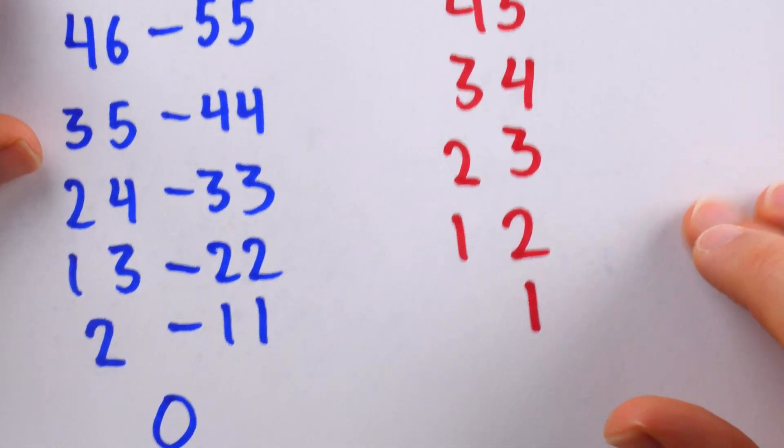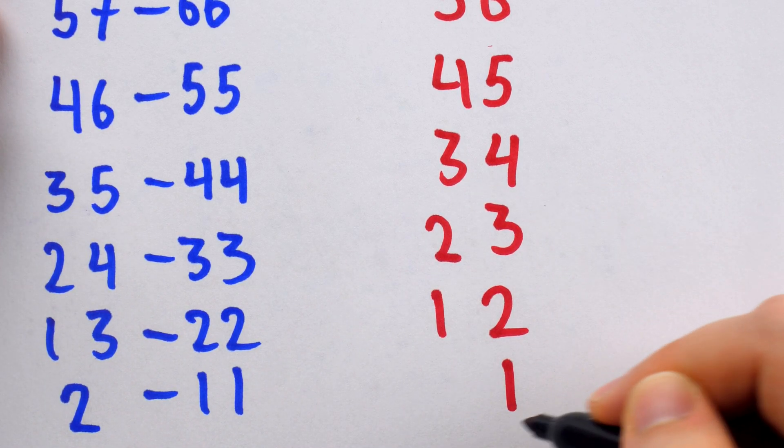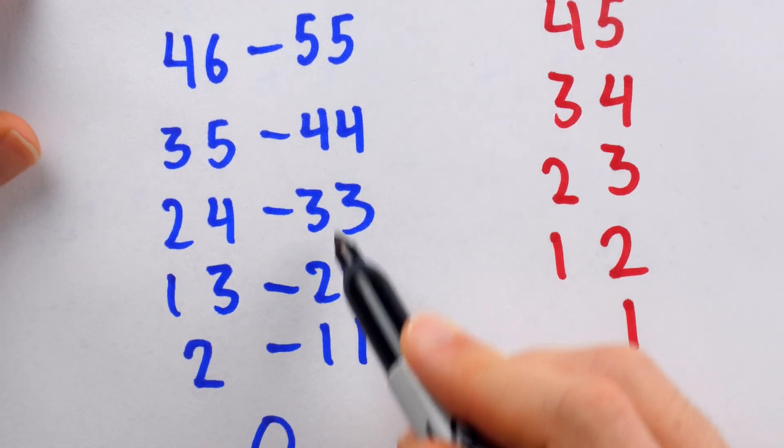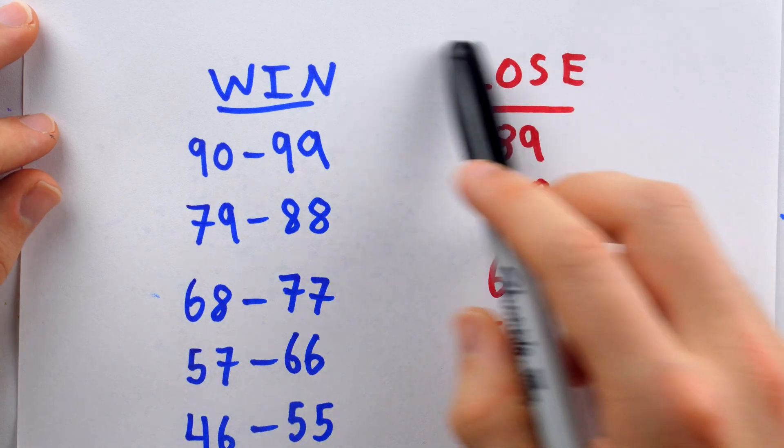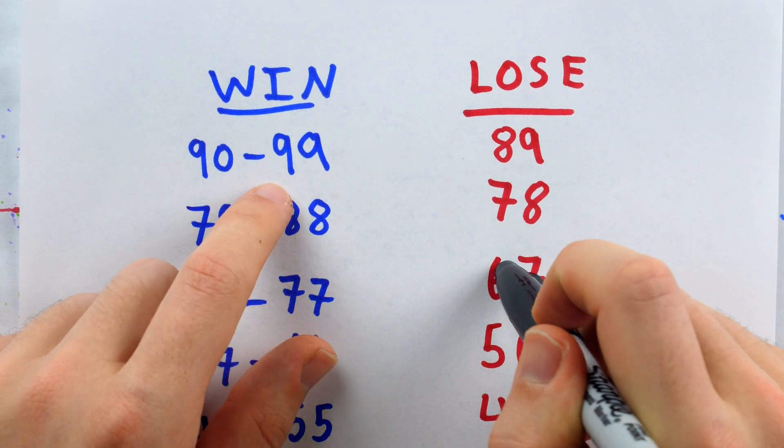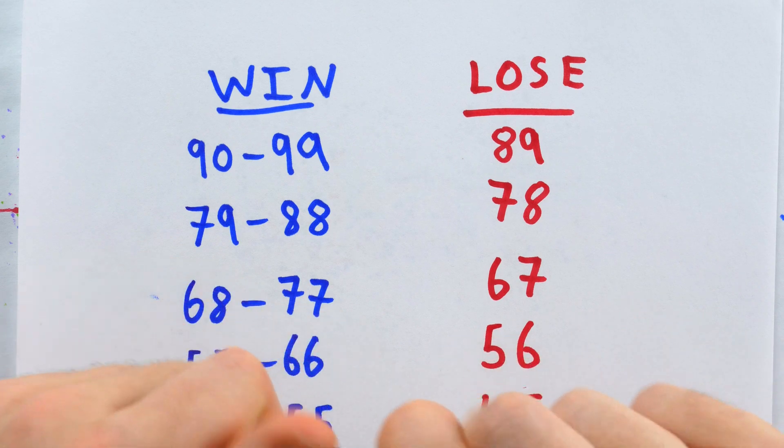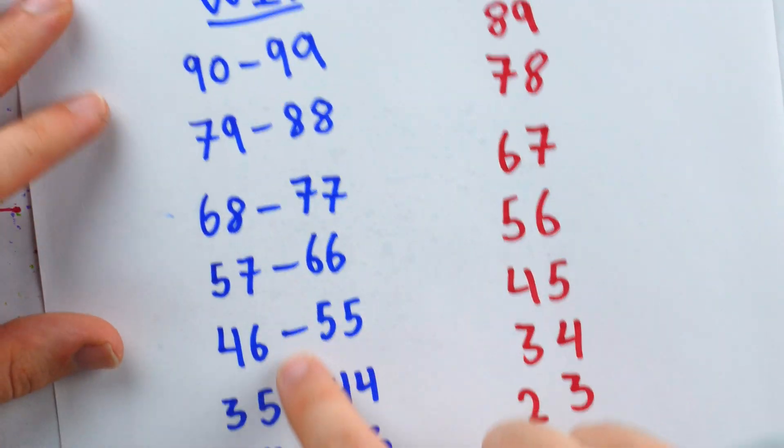If the starting number chosen is one of these losing positions, then the first player is going to lose. Otherwise, if it's one of these winning positions, then the first player has an easy path to victory. So you could try this game with your friends for some fun. I'd recommend that you let your friend go first before they've had that much time to think about the game, where hopefully they'll put you in one of these winning positions, and then you can lock down the W.